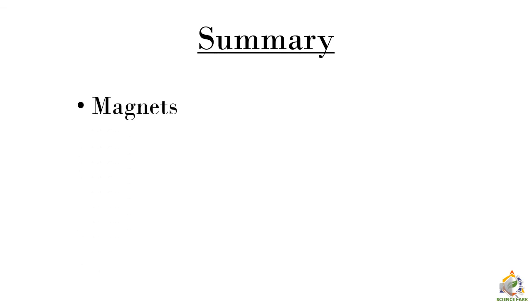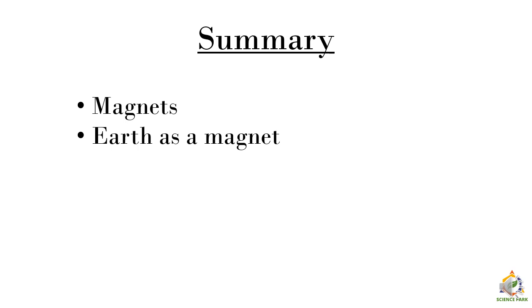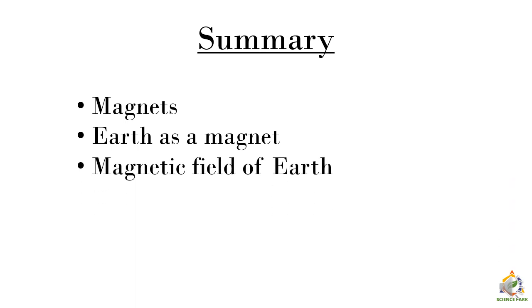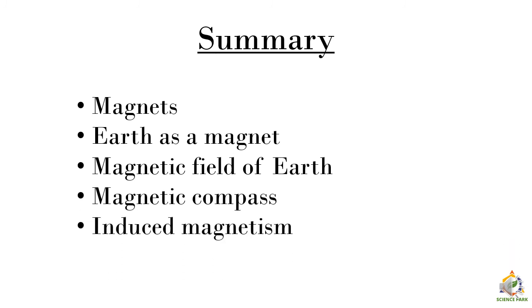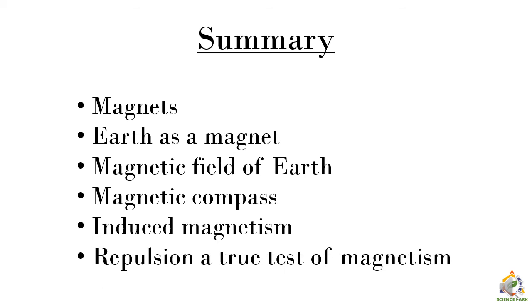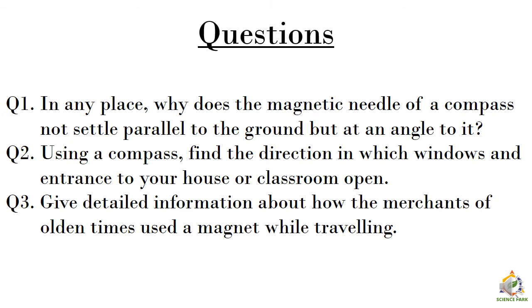Let's summarize the session. We saw magnets and the materials they are made from. We saw why earth is a magnet and the magnetic field of earth. We saw the magnetic compass and how to make temporary magnets using induced magnetism. Finally, we found out how repulsion is a true test of magnetism. Here are some questions — kindly note them in your notebook and write the answers. Thank you.